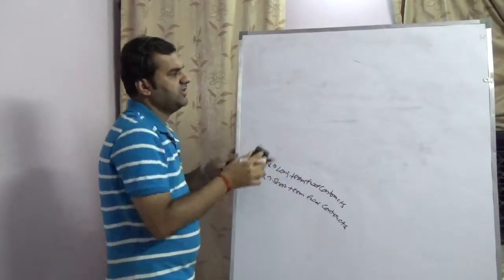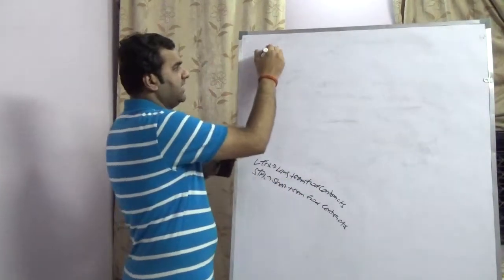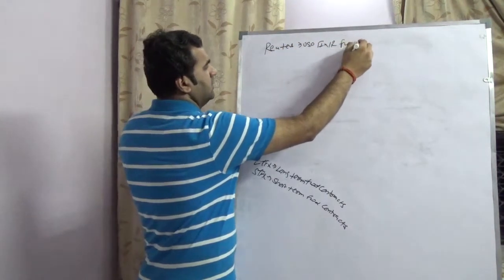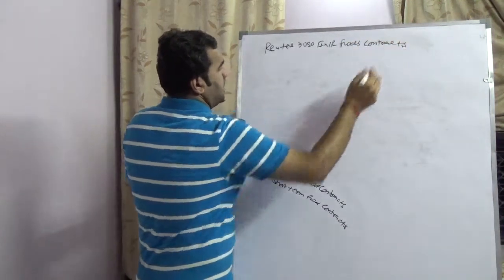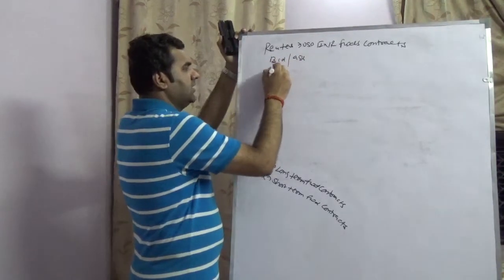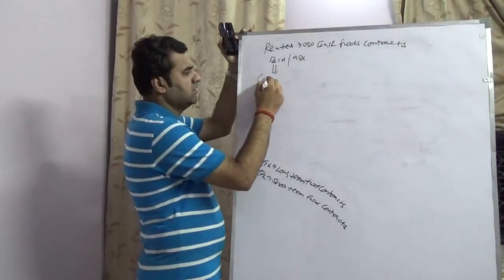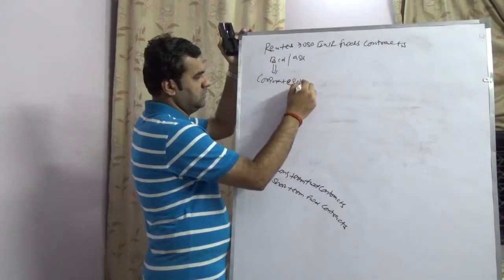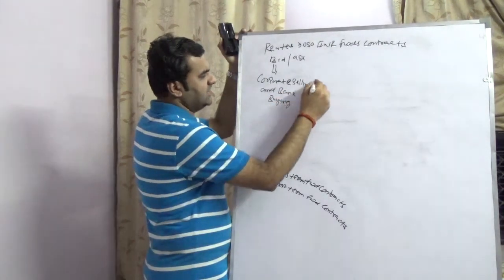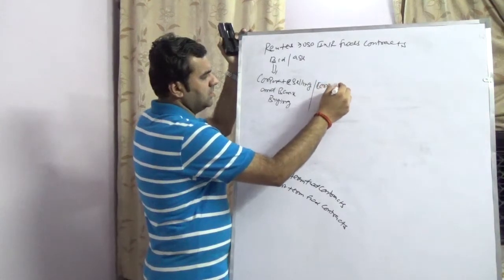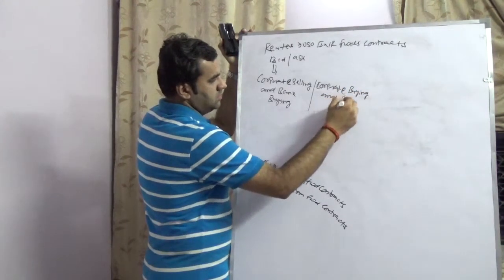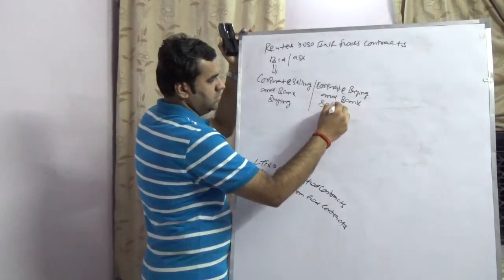So in case today we will take one example which is USD INR. So I assume this is Reuters USD INR forward contract. In Reuters you will have two quotes: bid and ask. Bid refers to corporate selling and bank buying. And ask refers to corporate buying and bank selling.